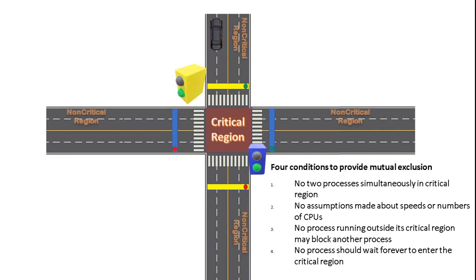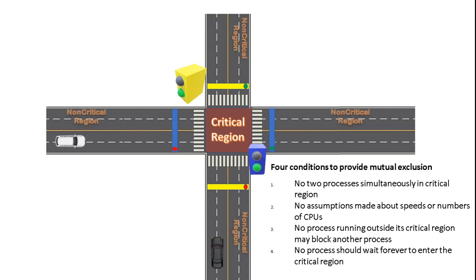But we still have a problem with this solution. If two cars arrive at the same time, both traffic lights will be red at the same time, and they will wait forever — which is also called starvation.